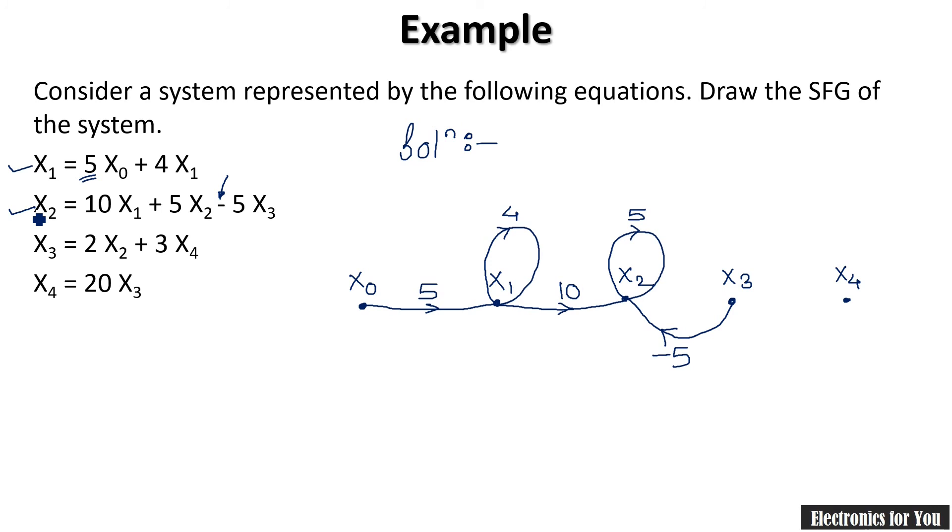Now let us draw the signal flow graph for x3. x3 equals 2x2 means you are moving from x2 to x3 and its gain is 2, and 3x4. Note here that it is not x3 at all, so 3x4 you are moving from x4 to x3.